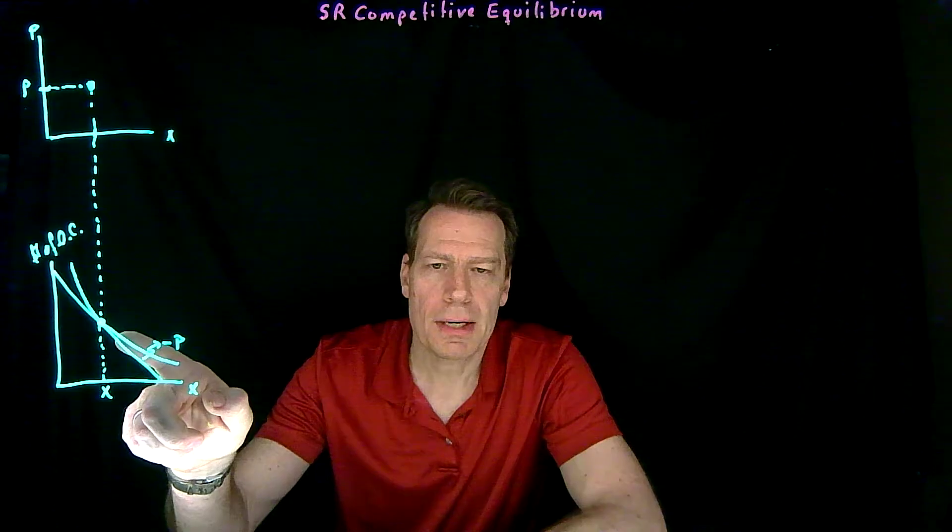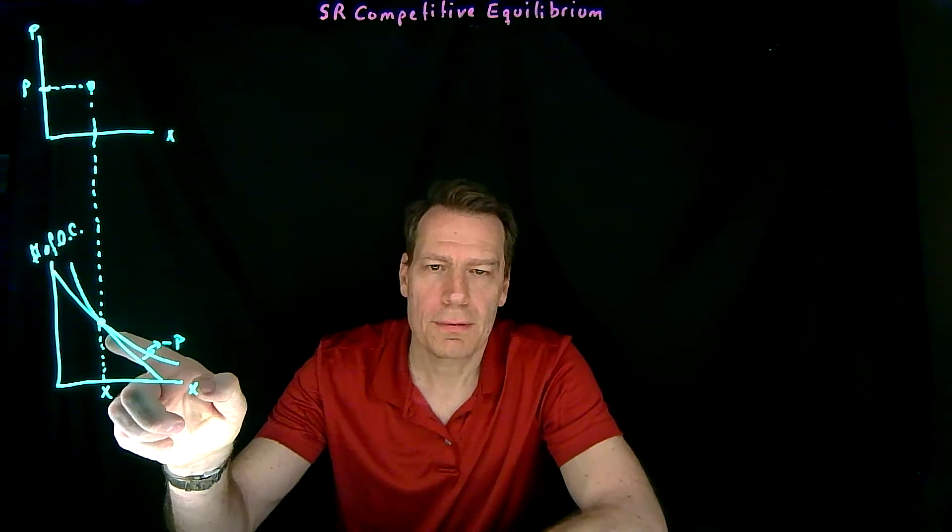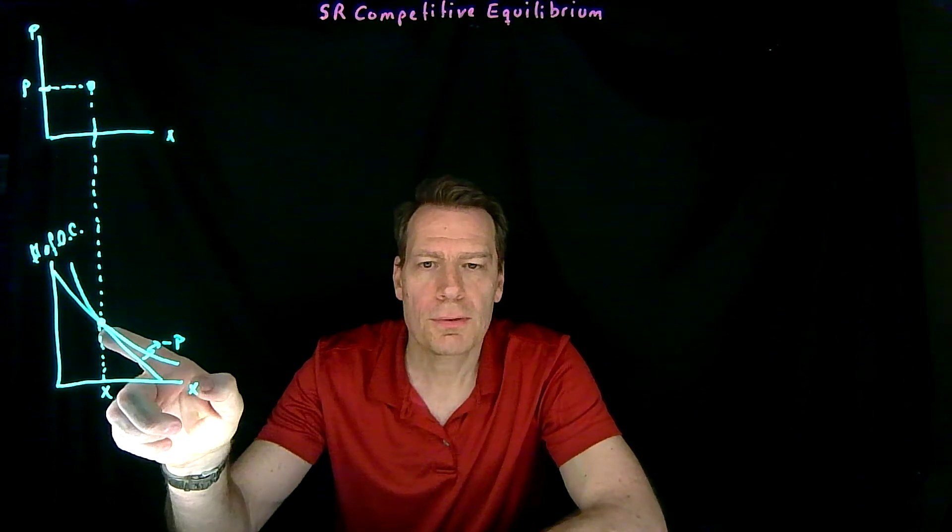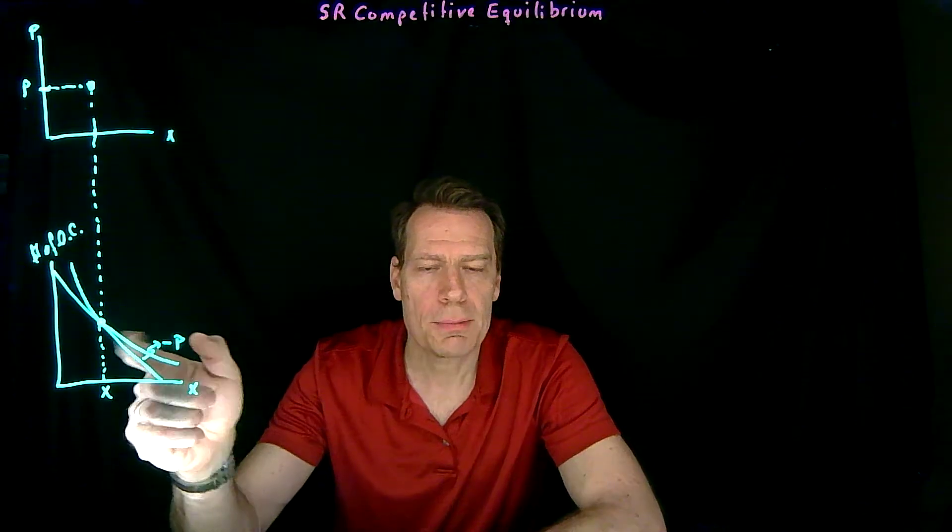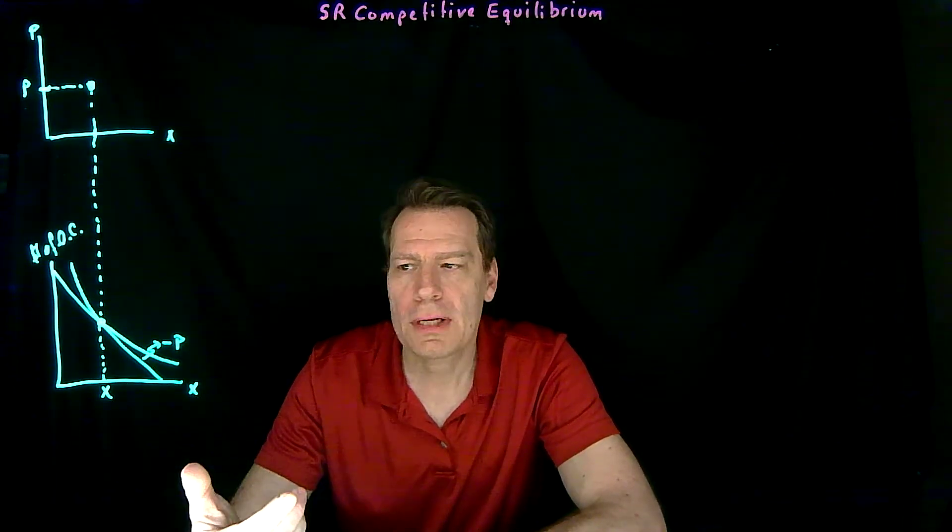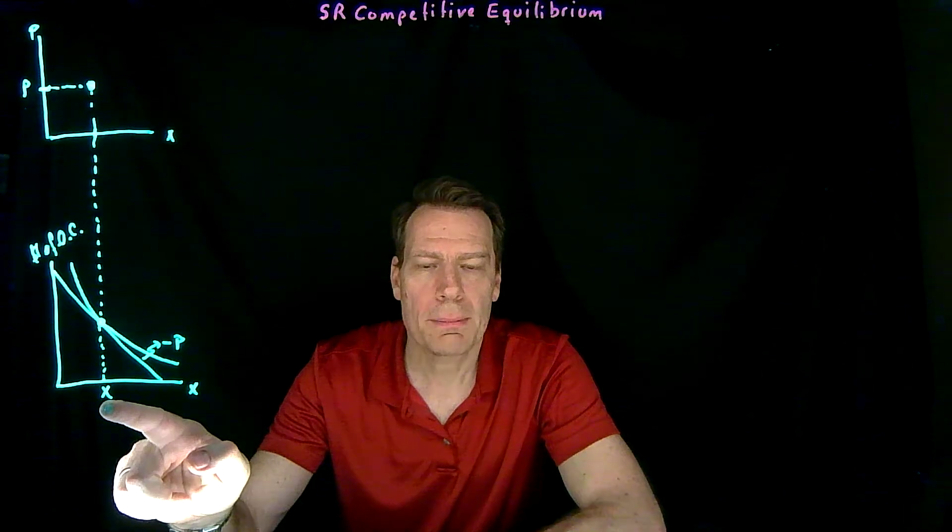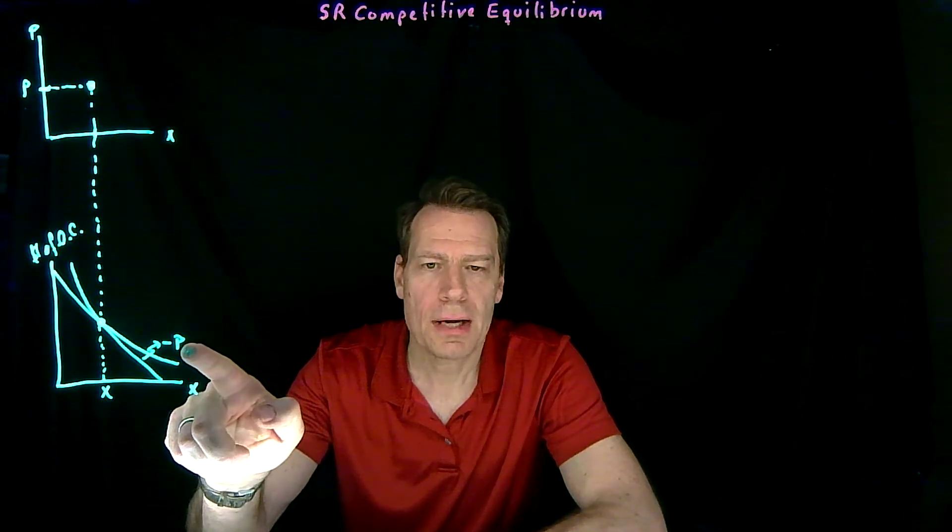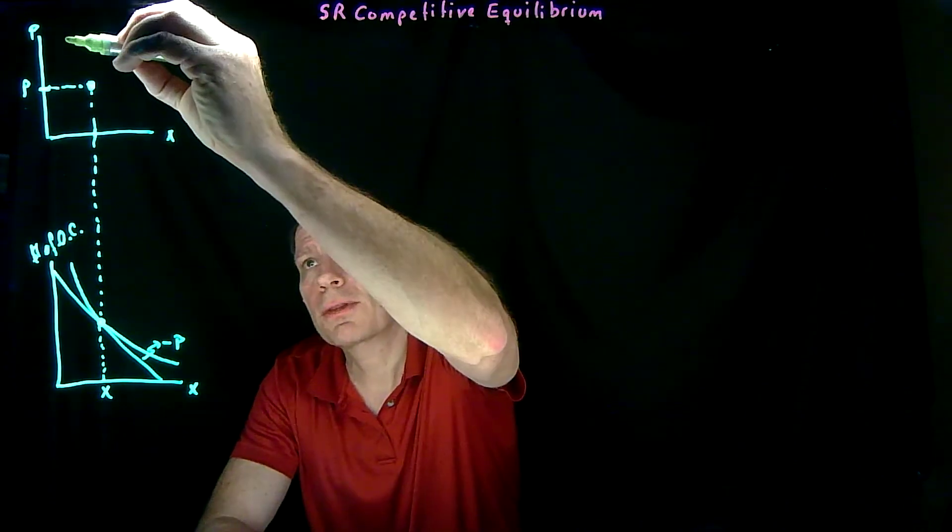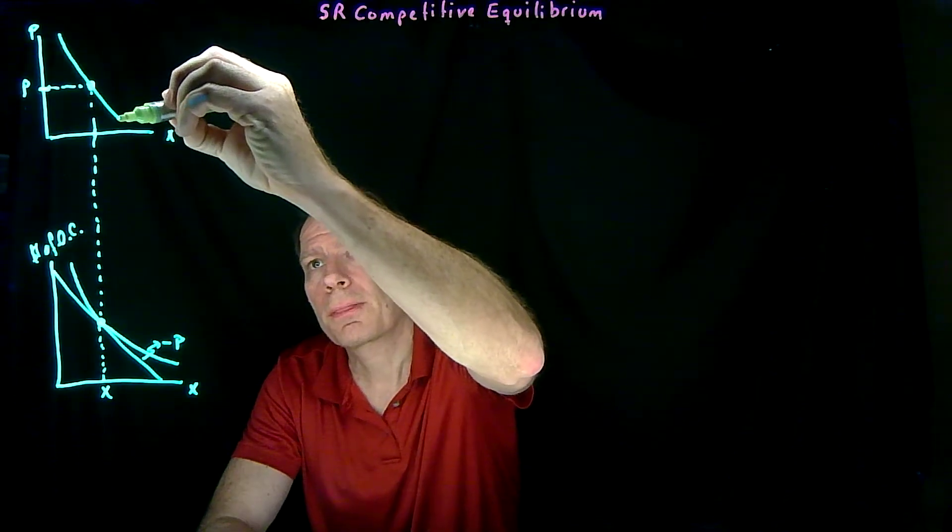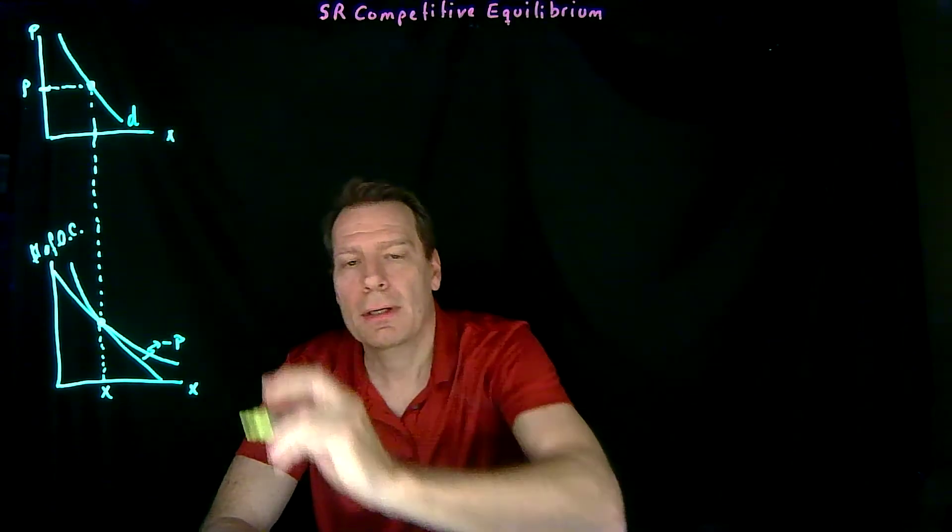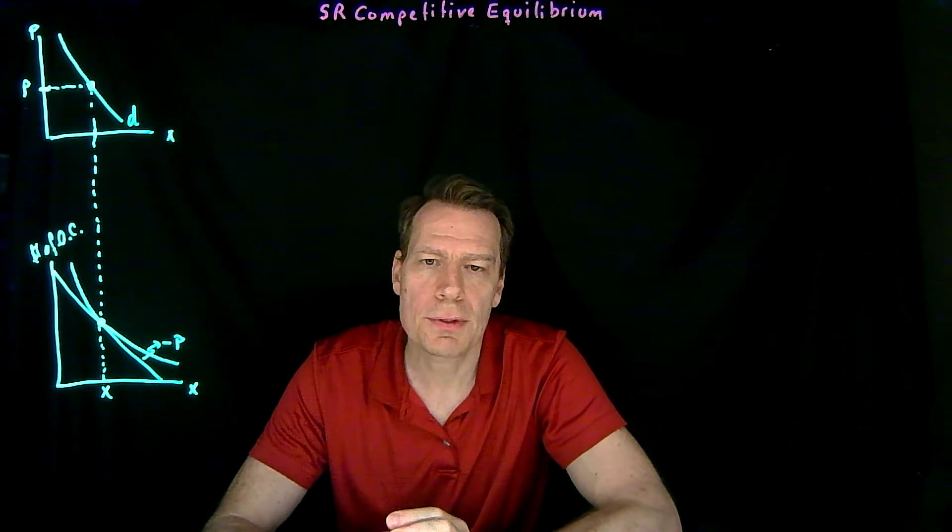Then we could change the price of good x in this graph, and as we changed it, we could find different optimal consumption bundles, and thereby trace out how the consumer's quantity demanded changes as the price changes. So trace out the rest of the demand curve. And typically that would slope down and give us the consumer's individual demand curve.